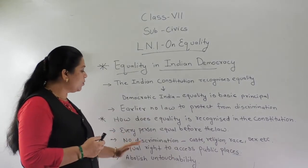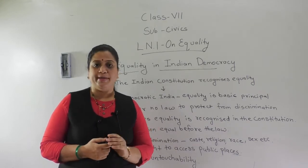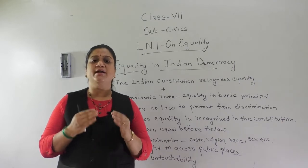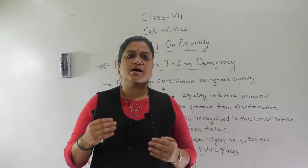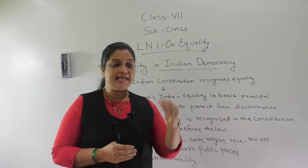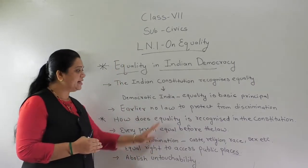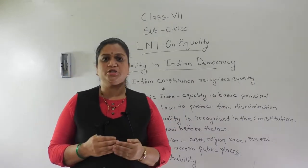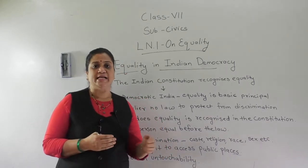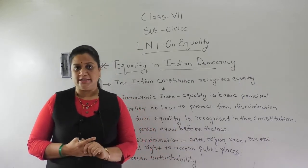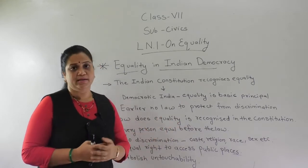The third one is equal right to access public places. How the untouchables were treated should not happen. Each and every individual of a country has a right to access public places like markets, gardens, and temples. And the last one — our Indian constitution abolishes untouchability. Untouchables were given very bad treatment in society, so the constitution has totally abolished untouchability. These are the four ways through which our constitution recognizes equality in democratic India.